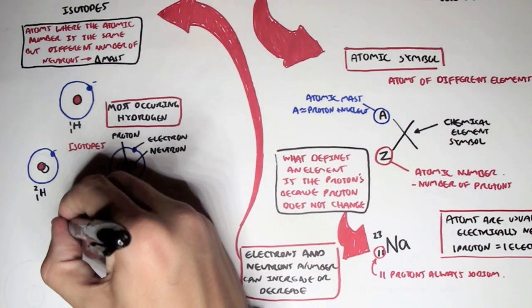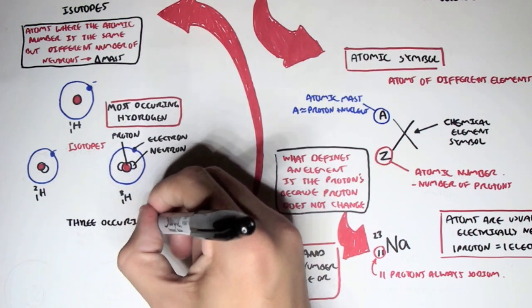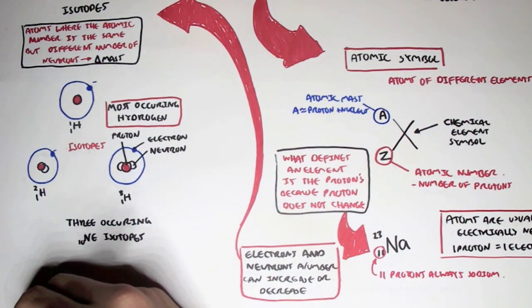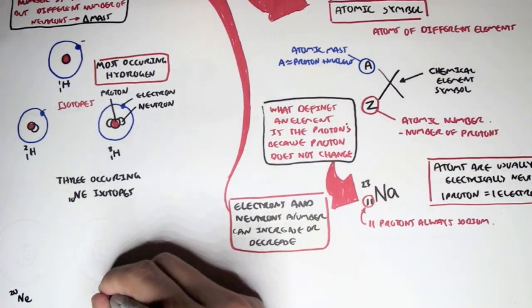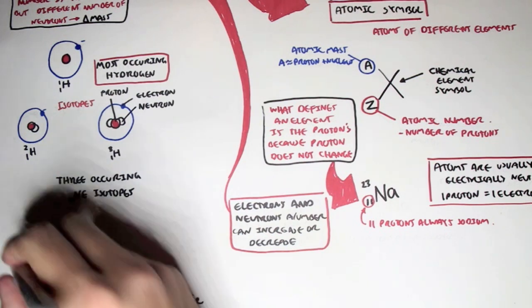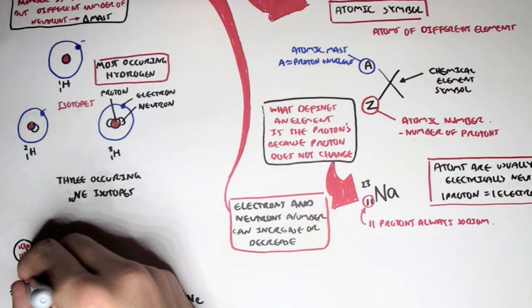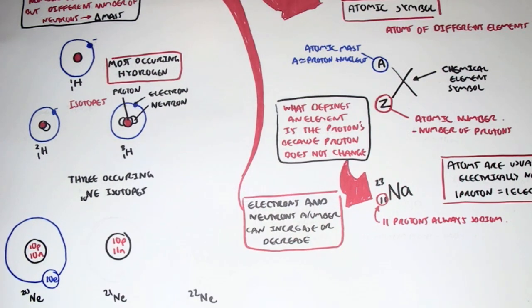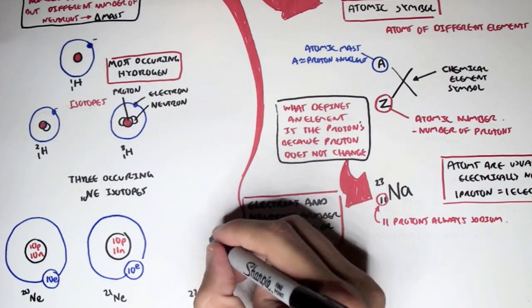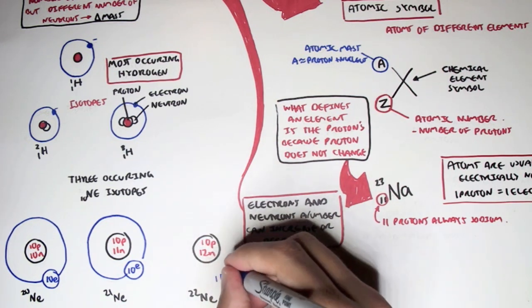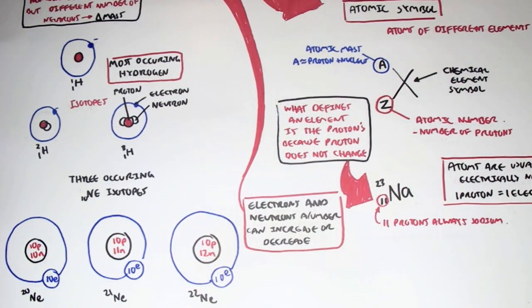Another example of isotopes is 3 occurring neon isotopes with the atomic number of 10. We can have a neon with the atomic mass of 20, 21, and 22. A neon with the atomic mass of 20 means that there are 10 protons and 10 neutrons. A neon with the atomic mass of 21 means that we still have 10 protons, but we have 11 neutrons. A neon with the atomic mass of 22 means that we still have 10 protons but 12 neutrons and we still have 10 electrons.